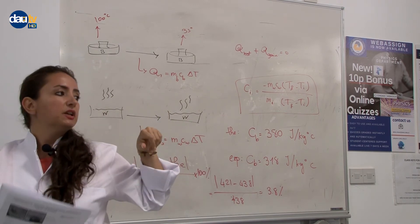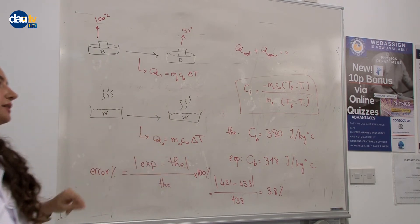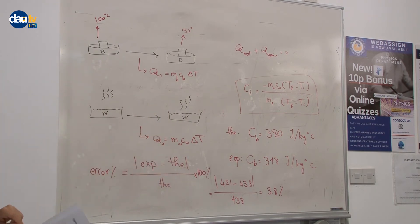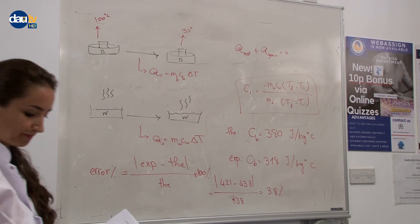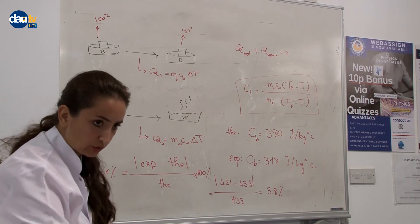In this experiment we finish defining the specific heat capacity of brass and iron. In the next step we will define the latent heat of ice.